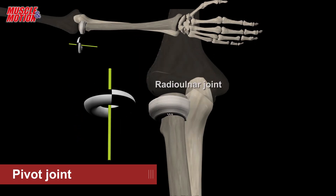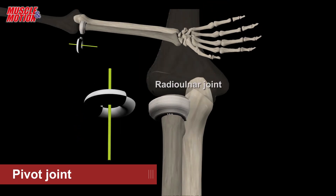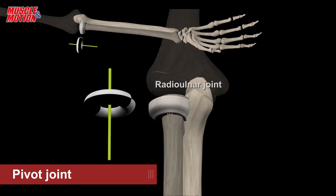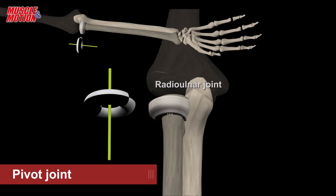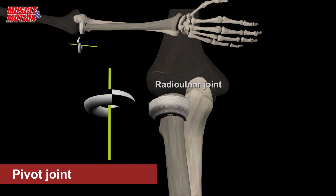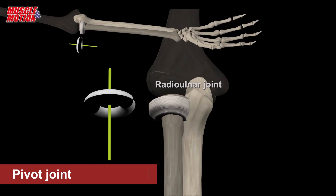Pivot. Allows for rotation only. It is formed by a central bony pivot. For example, the proximal and distal radial ulnar joints.